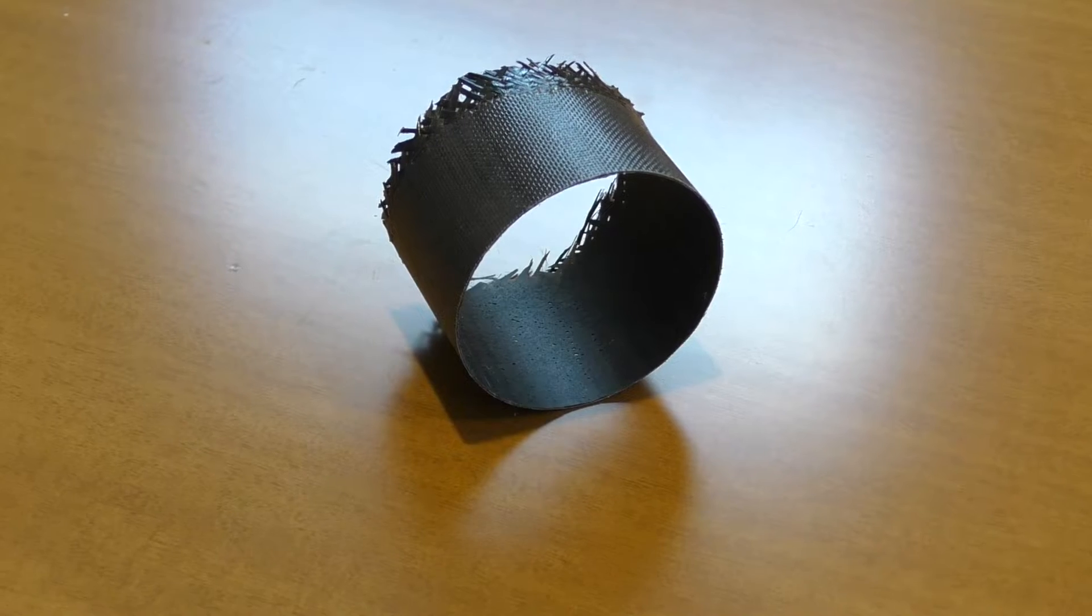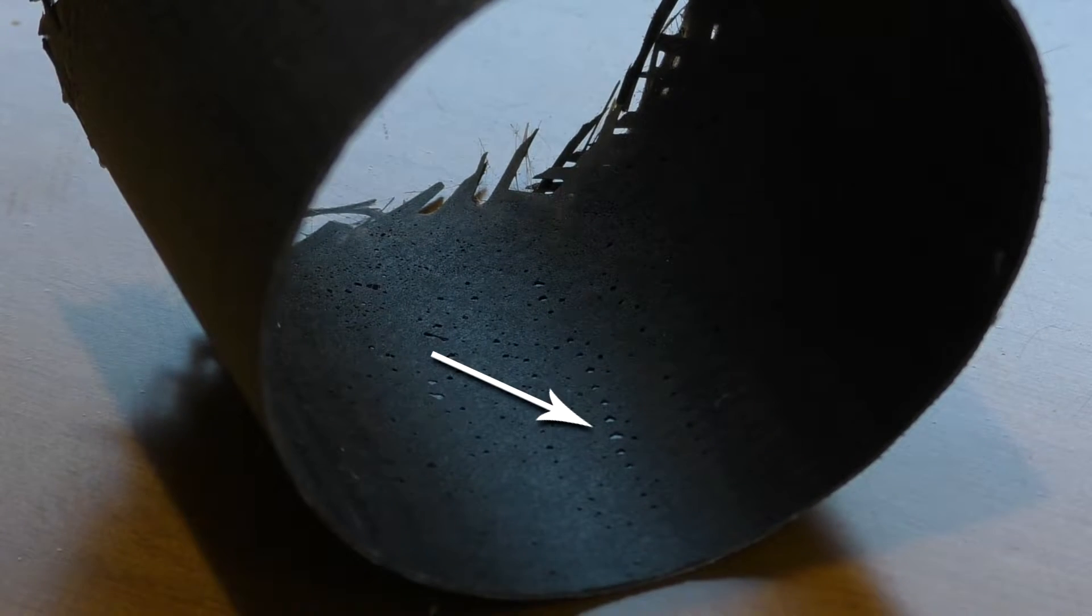If you look closely, you can see small pits on the inside of the sleeve. This is where the epoxy didn't fully penetrate the sleeve and could potentially cause the tube to leak.